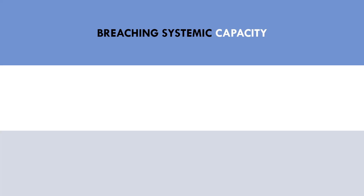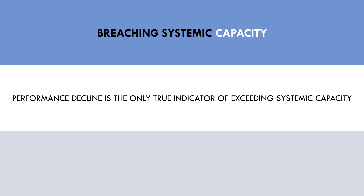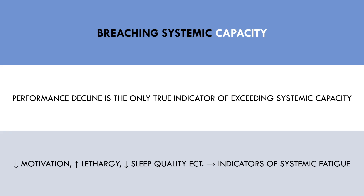So how do we know where the limit of our systemic recovery capacity lies? The only true way to test this is using performance. If we continue to train with more volume over time and performance starts to decline, then we have probably reached our systemic recovery capacity. However, there are other indicators including a lack of motivation to train, lethargy, and poor sleep — though these can also occur when training with adequate volumes.